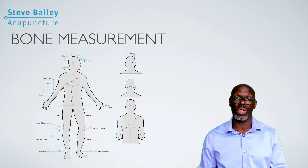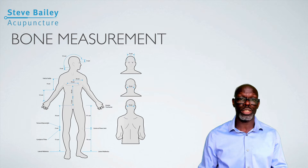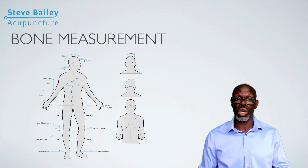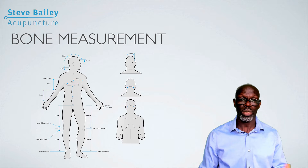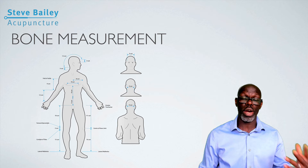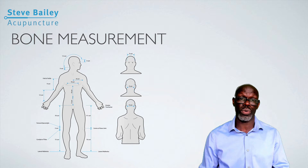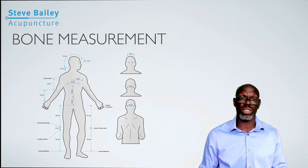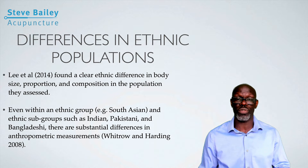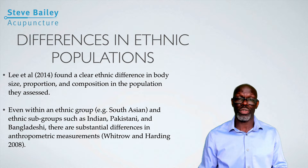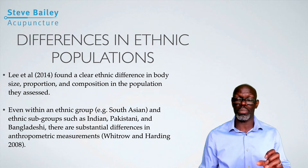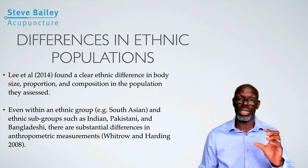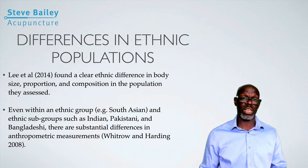One key thing to bear in mind is that the population for which these measurements were designed was mainly the Chinese and Asian population, so they don't span across the entire world. Depending on where you are and your ethnicity, it will determine your body makeup and composition, and it's going to vary from one country to another. Even within Asian countries — Indians, Pakistanis, Bangladeshis — they will have different body compositions. You can't use the sun measurement and expect to be in an absolutely precise location; it will only guide you to an approximate location.